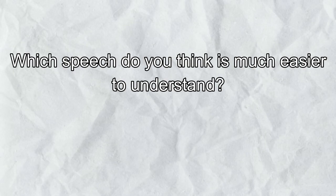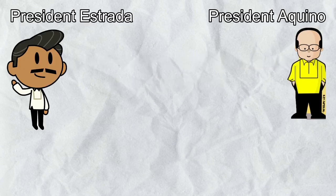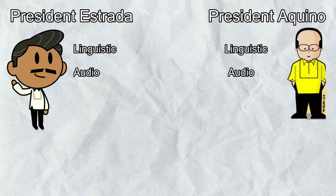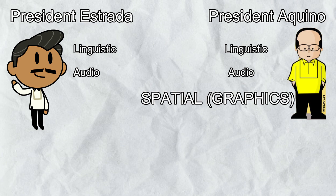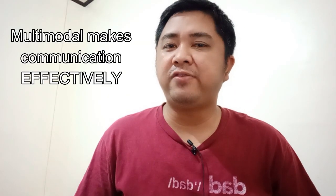Which speech do you think is easier to understand? Let's compare. The first speech is by President Estrada, where he used linguistic or spoken language and the audio of his voice. Then Aquino uses linguistic and audio also, but he uses spatial as the graphics. And that alone can make communication effective.